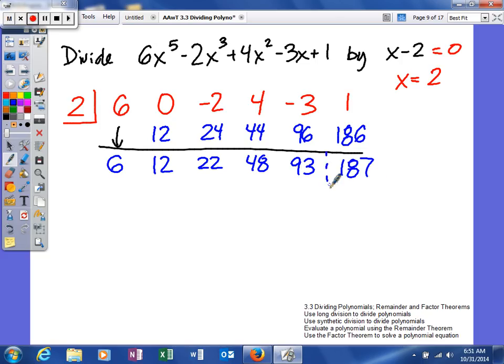To figure out what your quotient is, look at the degree of your dividend, which in this case is 5, and the degree of our divisor, which is 1. You just subtract those, so 5 minus 1 gives us 4.